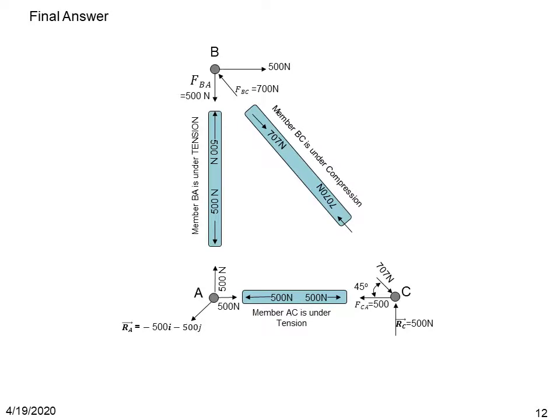The final answer is a diagram showing the free body diagrams of joints A, B, and C, with the internal forces in members BA, BC, and AC — indicating whether each is in tension or compression — along with the reactions at A and C, all in a single diagram.